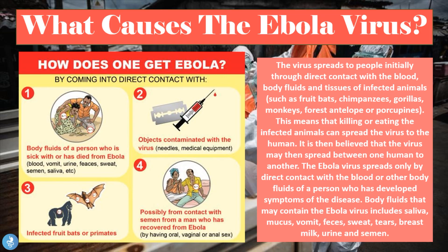The Ebola virus spreads to people initially through direct contact with blood, bodily fluids, and tissues of infected animals such as fruit bats, chimpanzees, gorillas, monkeys, forest antelope, or porcupines. This means that killing or eating infected animals can spread the virus to a human.